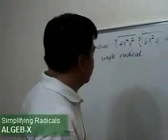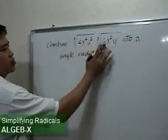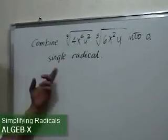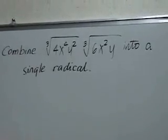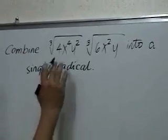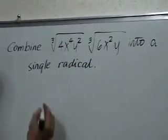This next problem asks us to combine these two radical expressions into a single radical. First, we look for the prime factors of the respective radicands and write